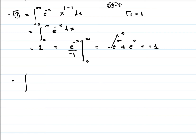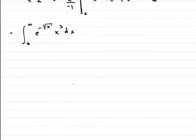Sometimes the examples may not be that simple. For example, consider the integral from 0 to infinity of e raised to minus square root of x, times x raised to 3, dx. We may try to solve this by substitution or by parts and waste a lot of time. But we always have to remember that the definition of gamma of n is the integral from 0 to infinity of e raised to minus x, x raised to n minus 1, dx.